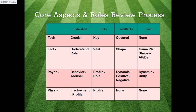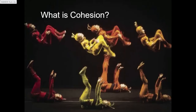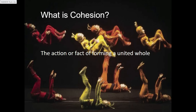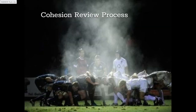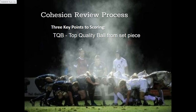So that's how to think about the game combining both the core aspects and the unit roles into a simple review process. Now we're going to talk about what I believe to be the single most important thing to look at in rugby if we're going to be successful — and that is cohesion. Cohesion's very definition is the action or fact of forming a united whole. There are two key aspects: the cohesion review process for our attack and the opposition's attack, and a team cohesion index which we'll get into at a later date.